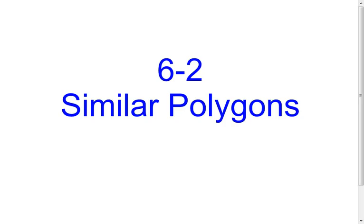In this lesson I'm going to talk about similar polygons. Similar polygons are kind of like congruent polygons. With congruent polygons, the basic definition was same shape and same size. Now when you go to similar, the basic definition would be they're going to be the same shape but probably different size. They could be the same size, but more times than not they will be different size.